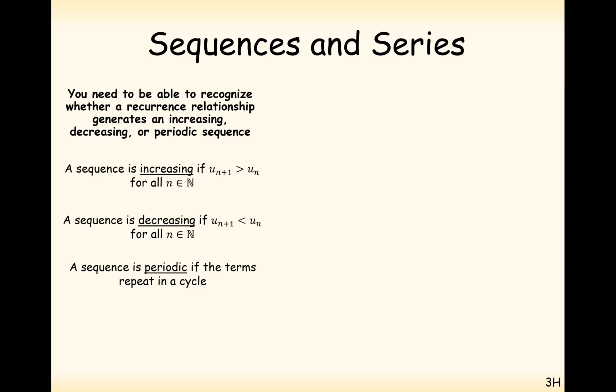And a sequence which is periodic is if the term repeats in a cycle. Sometimes it repeats in a cycle of 2, maybe a cycle of 3, maybe a cycle of 4, but it repeats in a cycle. The number of terms in the repeating pattern is known as the period or the order of the sequence.